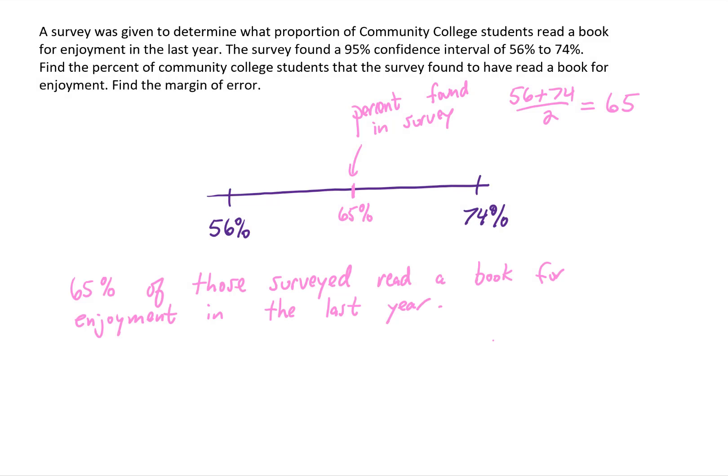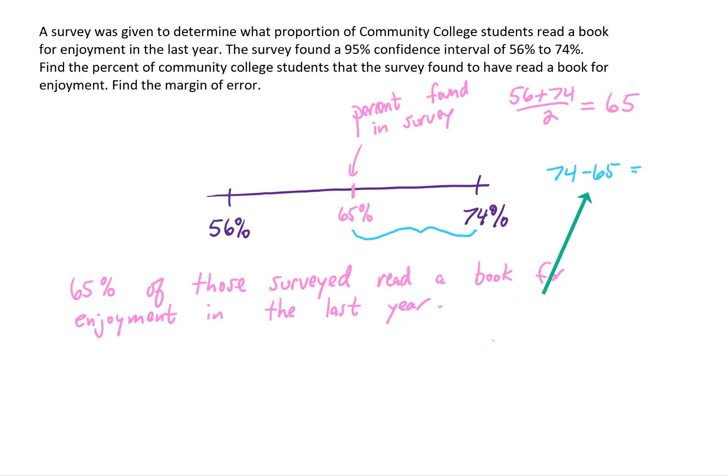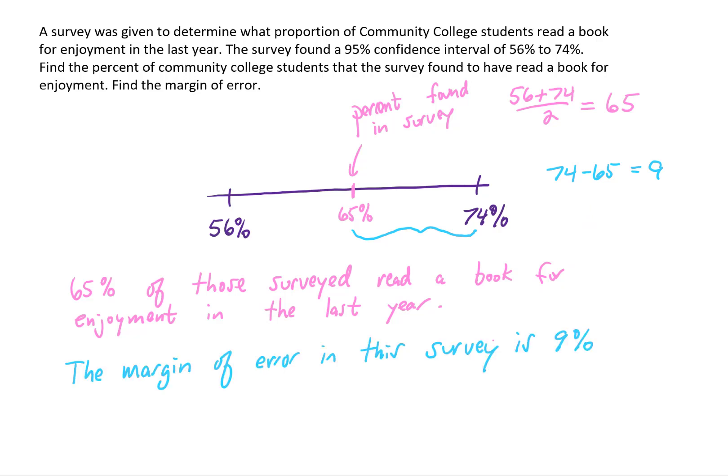To find the margin of error, we find the difference between the upper bound and the center value: 74 minus 65 equals 9. So the margin of error in the survey is 9%. The survey found 65% read a book for enjoyment, with a 9% margin of error, producing a 95% confidence interval of 56% to 74% for the population of community college students.